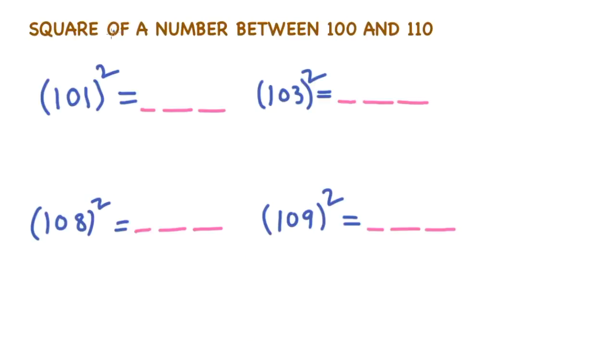Find square of a number between 100 and 110. See 101 whole square. We will divide it into 3 cases here. In this first case we will write 1 as usual. It comes to last one. Here last digit is 1. Square this. 1 square is 1. You write it as 01.